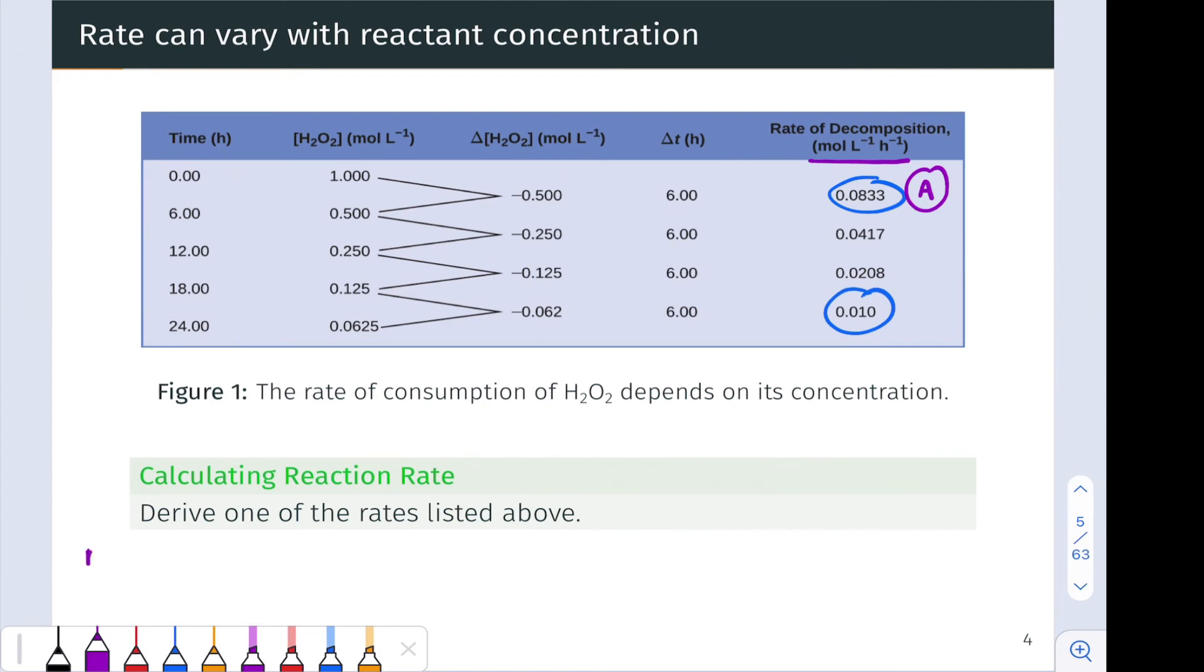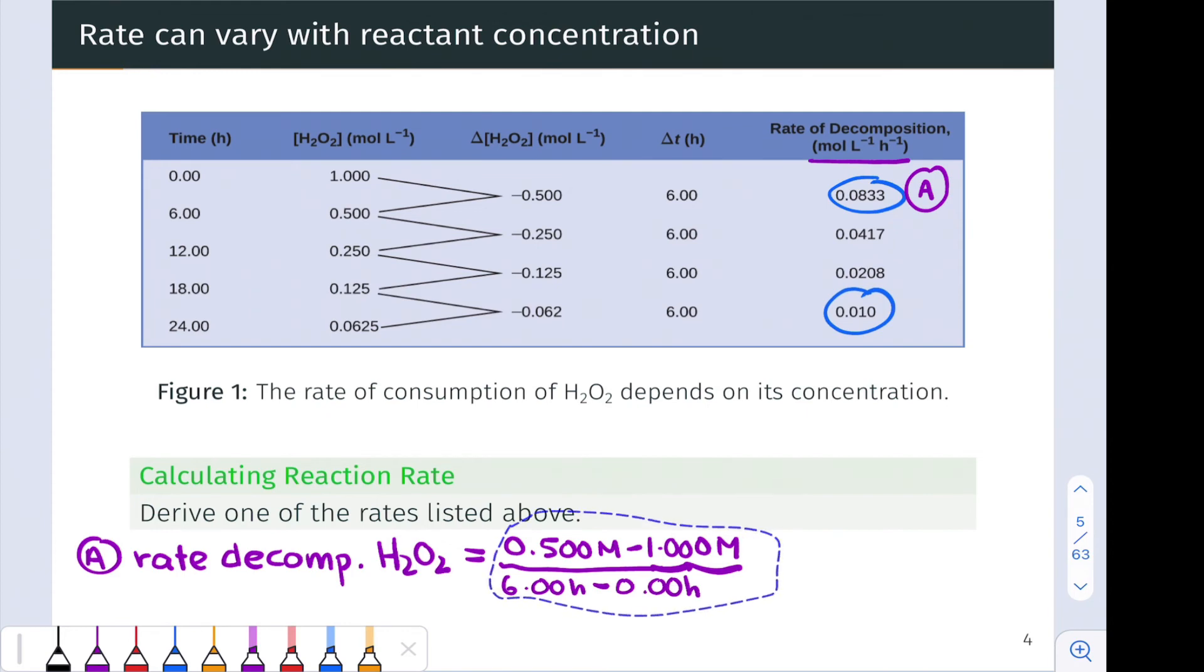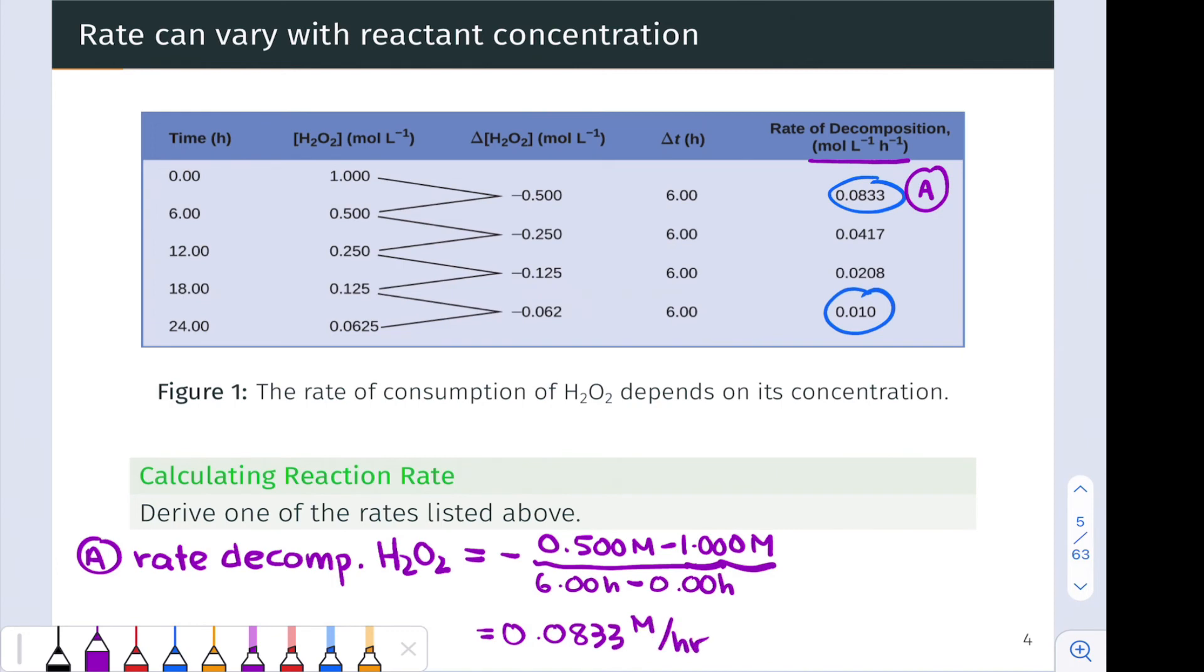So looking at that rate, which we called A, we can write the rate of decomposition of H2O2 as a change in concentration divided by a change in time. And notice this number is going to come out negative. So what we should do is take this whole expression and throw a negative sign out front since we're talking about decomposition of a reactant. And the resulting value is going to be 0.0833 moles per liter or molar per hour. And those units indeed match what's in the top right of the table that you see here.